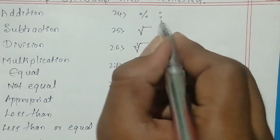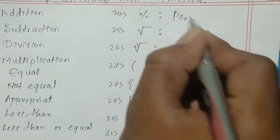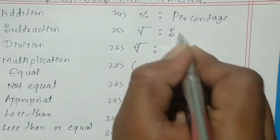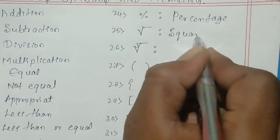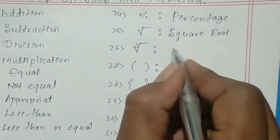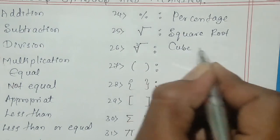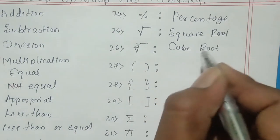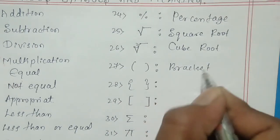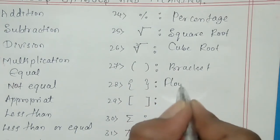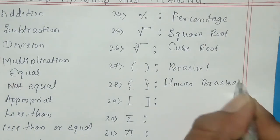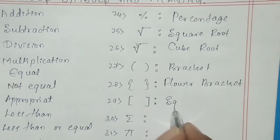Percent or you can write percentage. This is square root. This is cube root. This is bracket. This is flower bracket. This is square bracket.